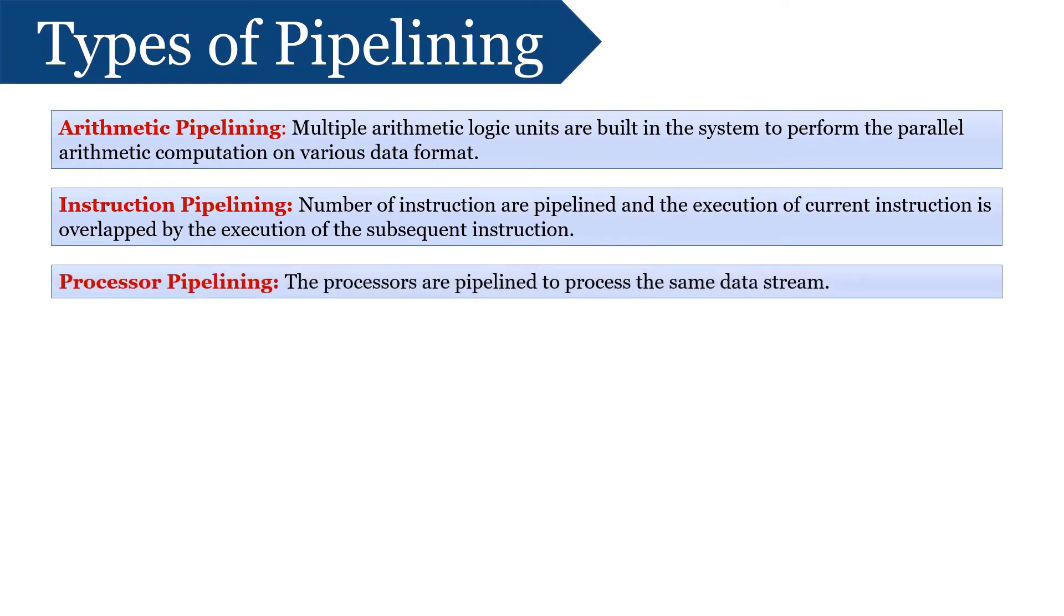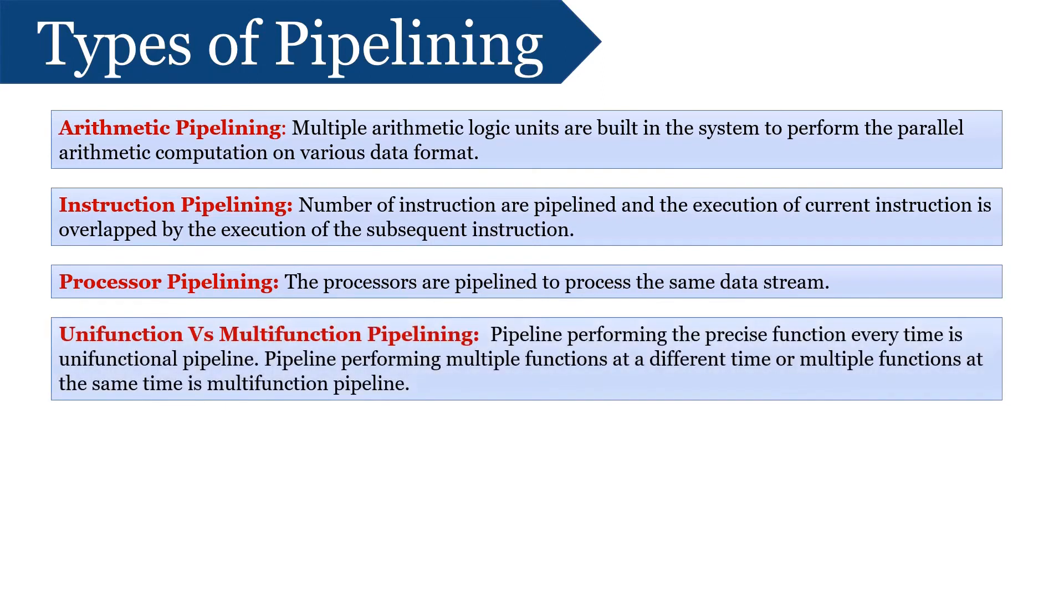Next is Processor Pipelining. Here, the processors are pipelined to process same data stream. Thus, data stream processed by the first processor is reprocessed by the second processor, and the result of second processor is reprocessed by the third processor. Next is Unifunction vs Multifunction Pipelining. The pipeline performing precise function every time is unifunctional, whereas the pipeline performing multiple functions at different time or multiple functions at same time is multifunctional.